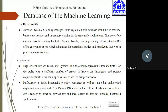The advantages of DynamoDB are: first, high availability and durability — it spreads data and traffic across a sufficient number of servers to handle throughput and storage requirements while maintaining consistent and fast performance. Second, performance at scale — DynamoDB provides consistent single-digit millisecond response time at any scale, and DynamoDB global tables replicate data across multiple AWS regions to provide fast local access for globally distributed applications.